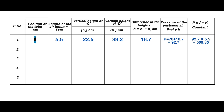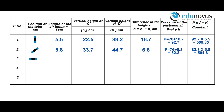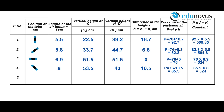Similarly, the values for different positions of the quill tube are recorded. From our observation table, the product of pressure and length of the air column is almost constant in each position of the quill tube. This verifies Boyle's law.